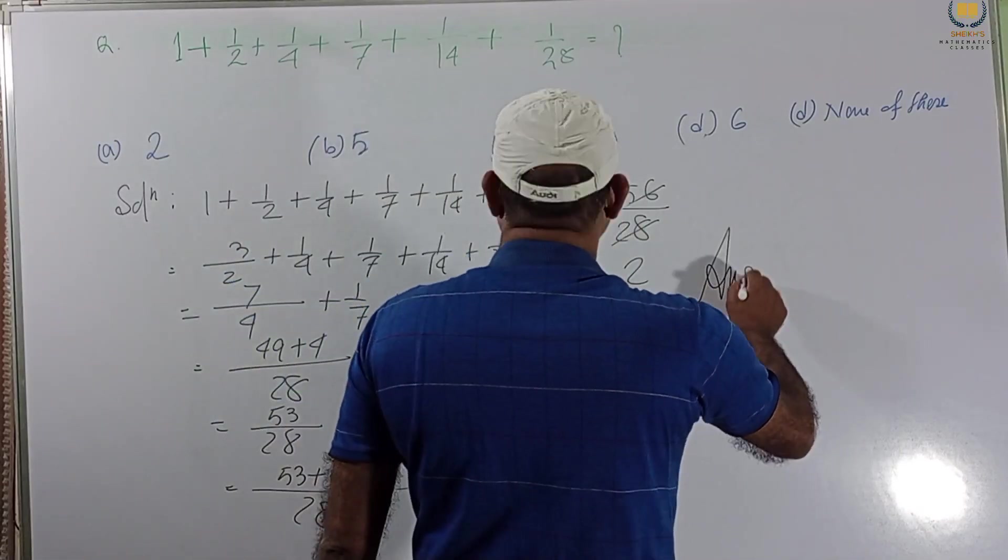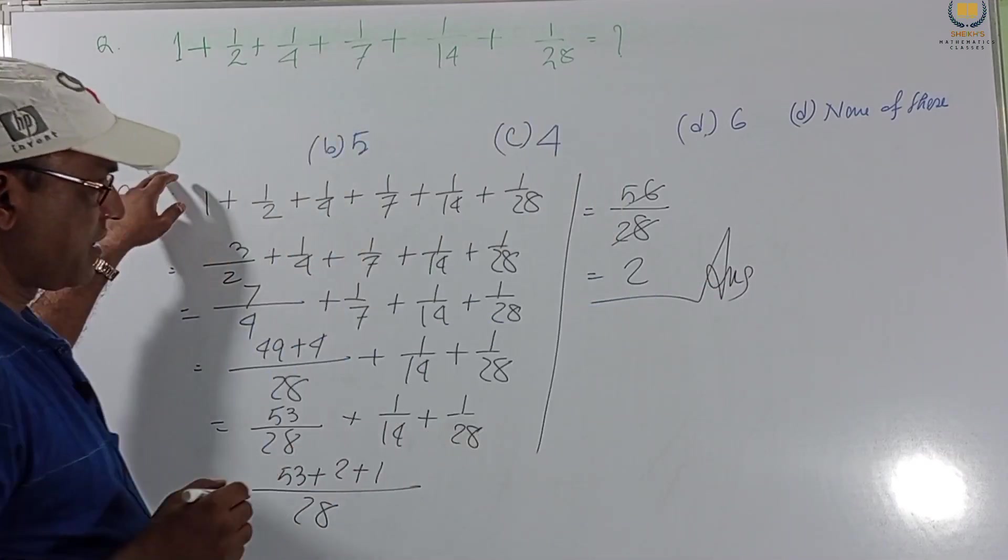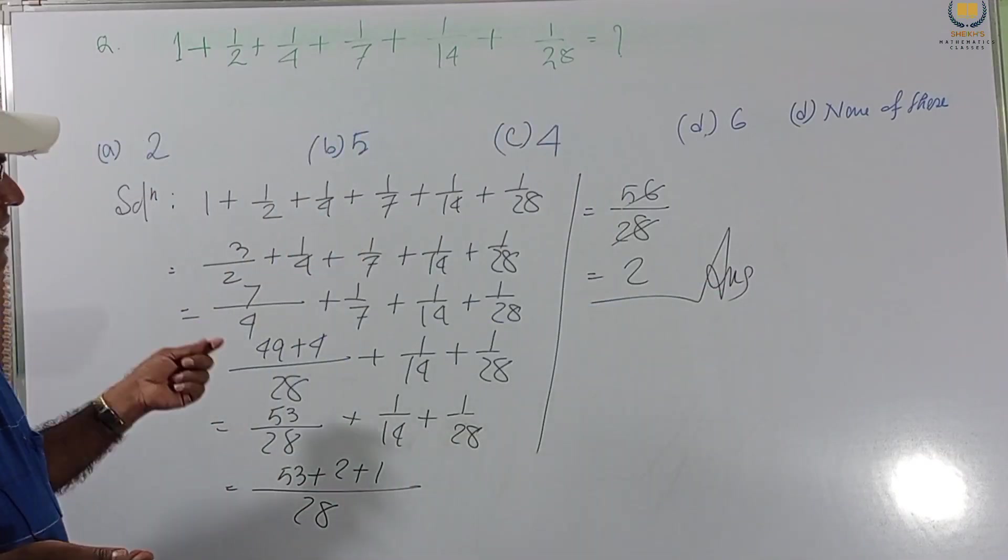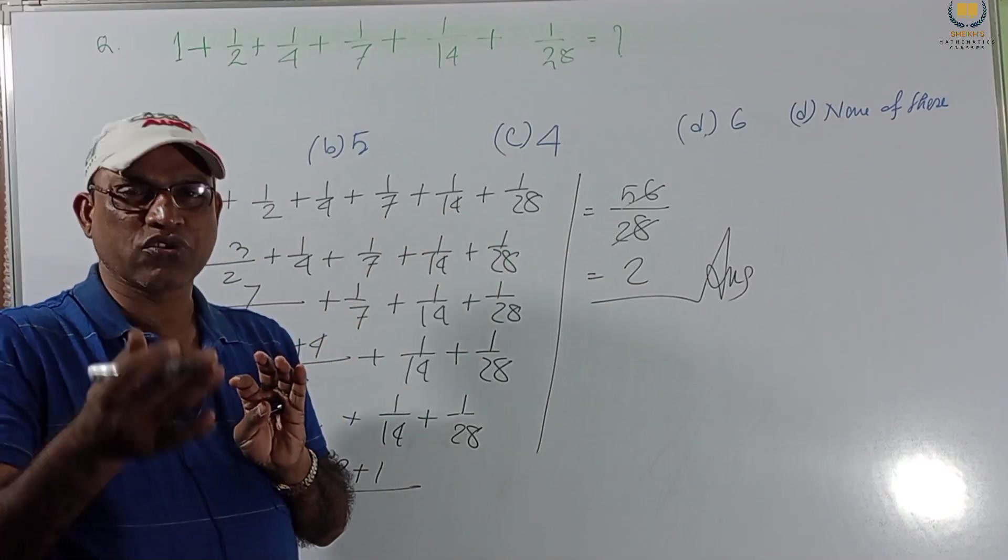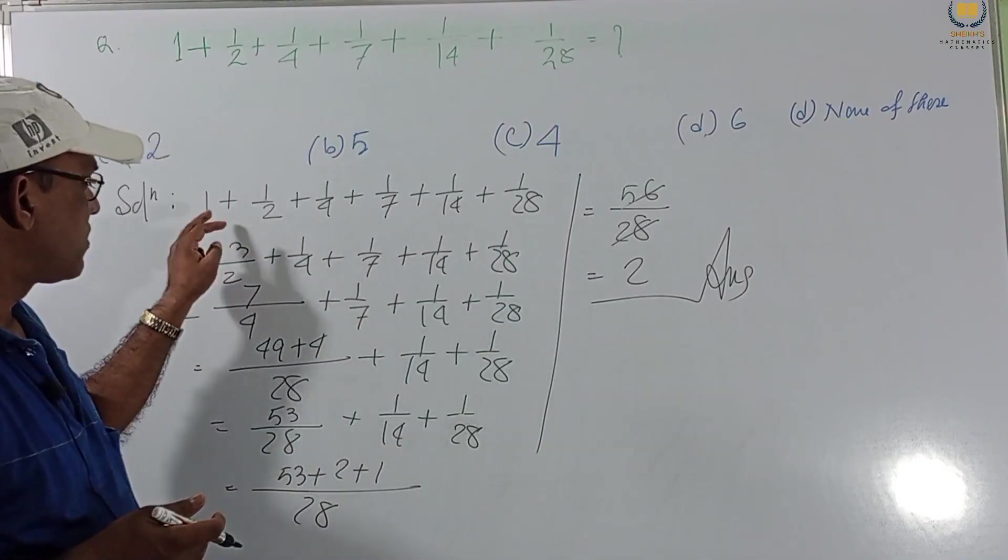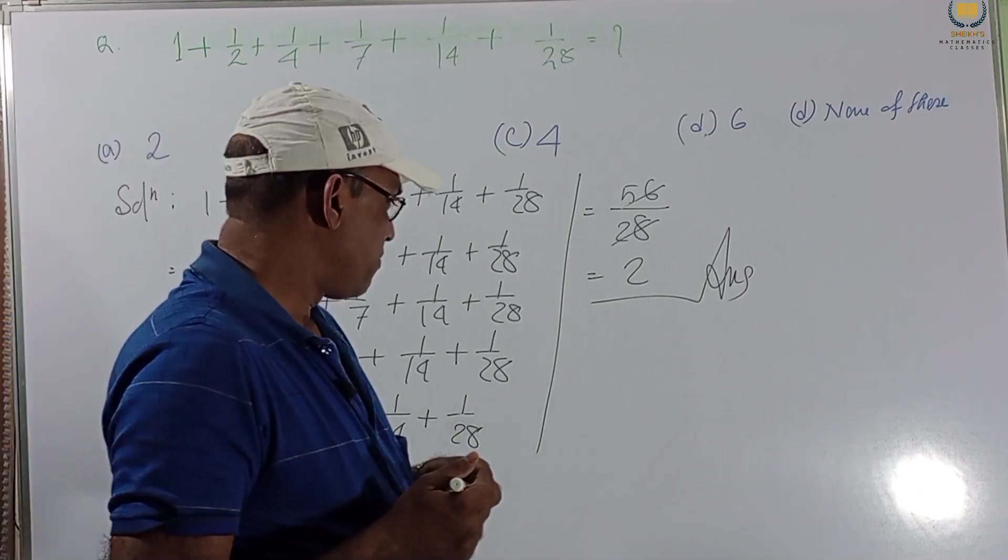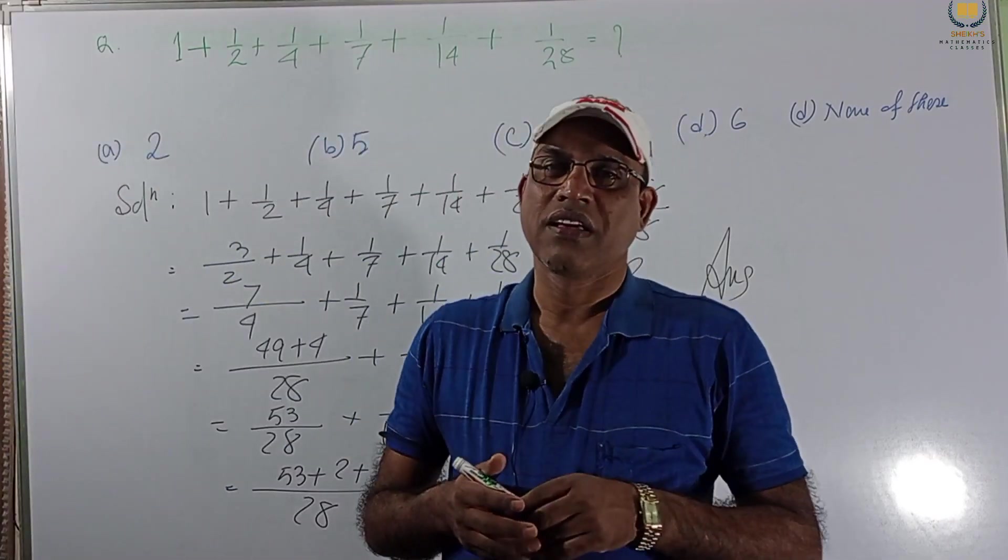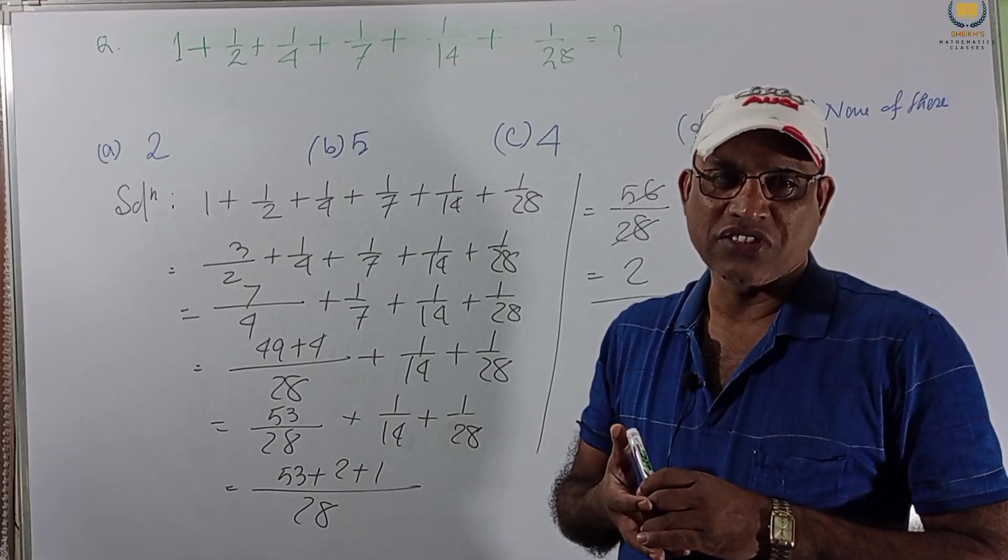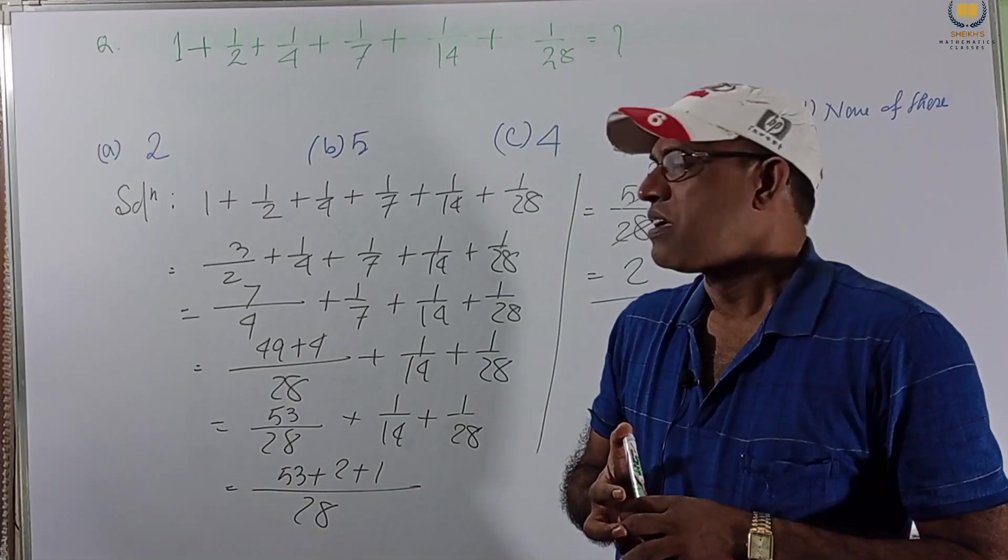Very nice solution. But, if we taking directly LCM also we get answer. But this will be long. So, we solve this one systematically. Then we can easily find the result. Mistake chance is 0. Or no tension. Tension free we can solve this. Now,